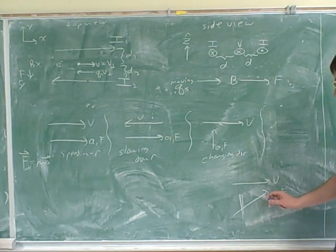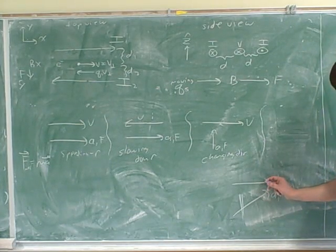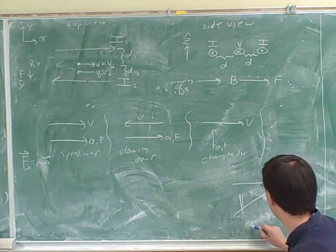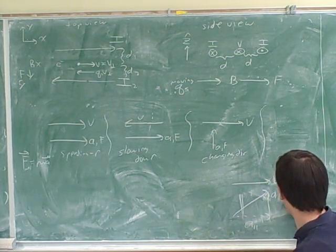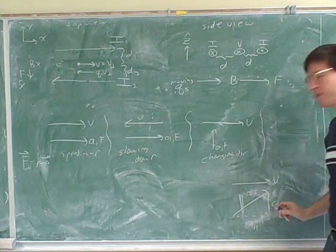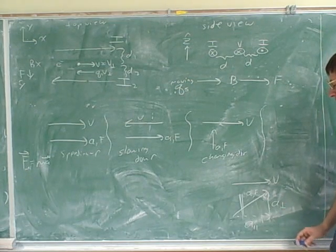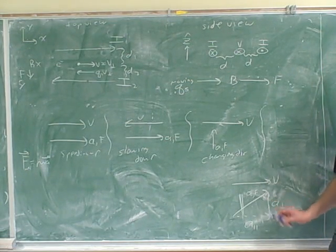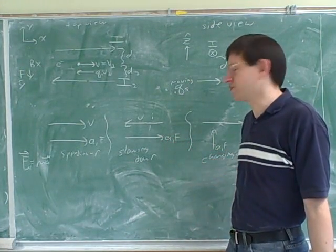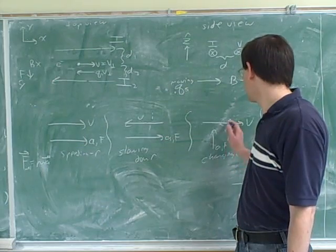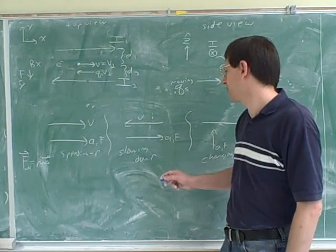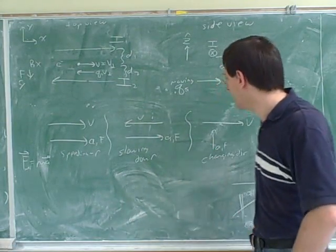What about when the acceleration is diagonal with respect to the velocity? Well, this must mean that we have one component of the acceleration that's parallel to the velocity and one component that's perpendicular to the velocity. So this would be a case where you're both changing your speed and your direction, which is certainly possible. And of course, everything we said for acceleration also holds for force, because they always point in the same direction. If the force is perpendicular to the velocity, it's changing your direction but not your speed. And if the force is anti-parallel to the velocity, it's slowing you down but not changing your direction.